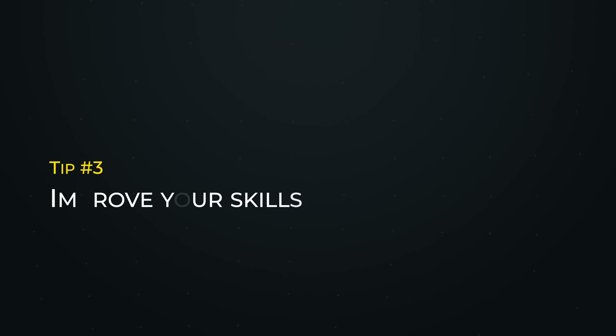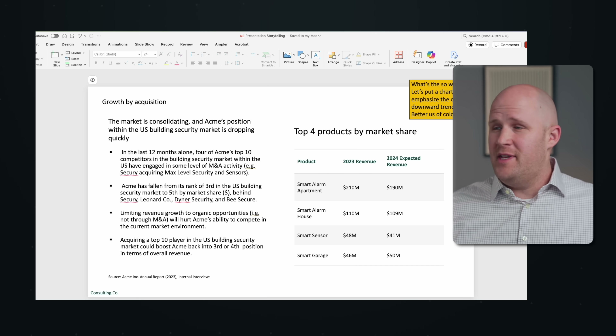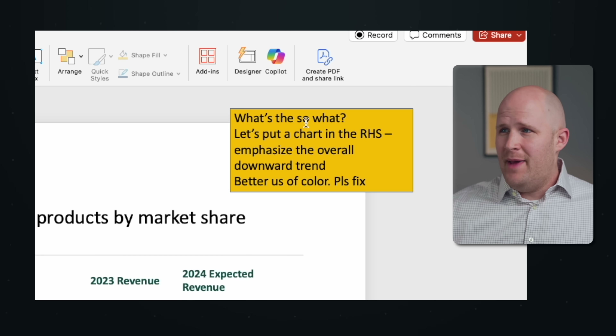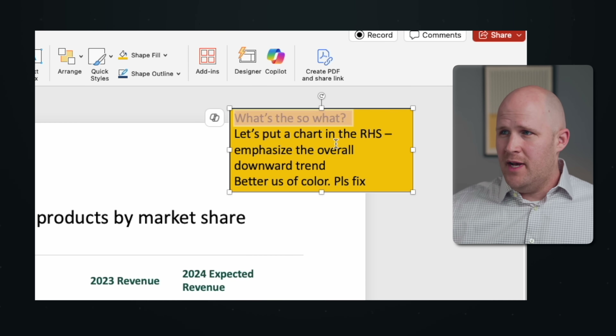Tip number three is to improve your slide-building skills — not just get immediate feedback, but improve your skills over the long term. One really practical thing, especially if you're more junior or need help building slides, is to use it to help you interpret your manager's feedback. It sounds really dumb, but it can actually be really useful. Let's say this is a slide I've built and my manager gave me this feedback.